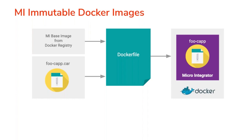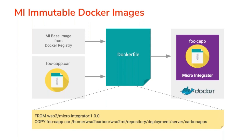The reason we call these immutable Docker images is that previously you could mount an external file system with the carbon application and run the Micro Integrator, but changes required restarts since there's no hot deployment. Even with hot deployment, there's inconsistency risk during rolling updates. What we wanted was to create an immutable Docker image with all artifacts fixed during the CI/CD cycle — a single unit where we can do extensive testing and push to production after verification. In the Dockerfile, you just use the correct base image and copy the carbon application to the deployment folder.